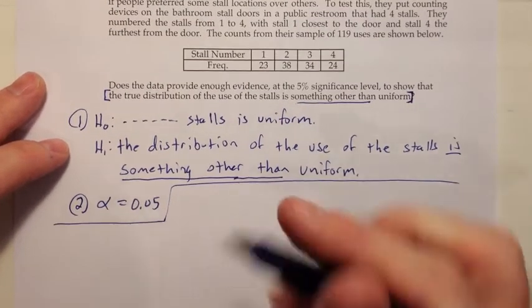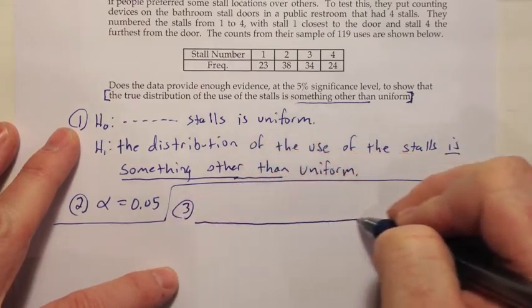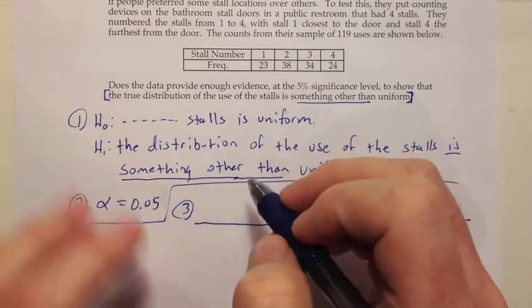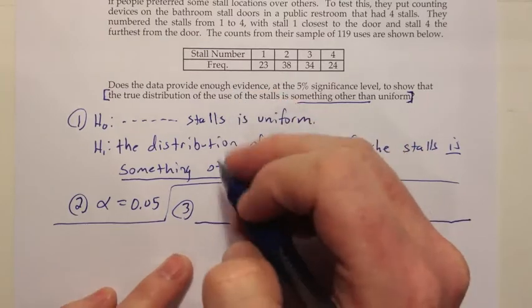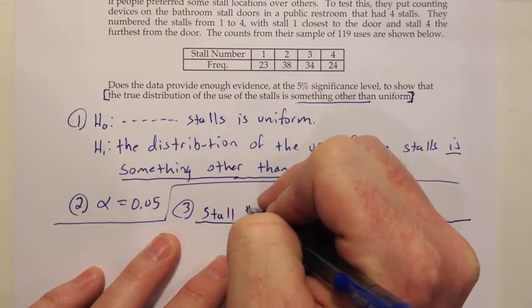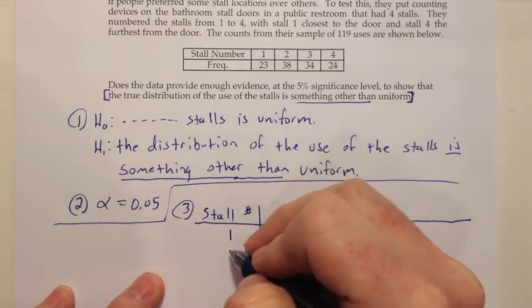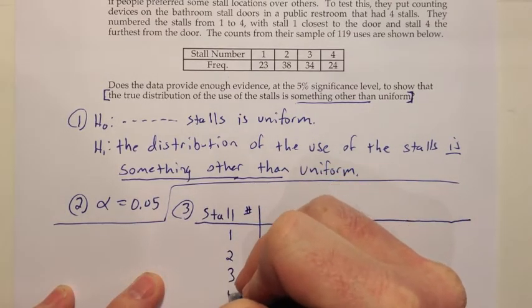And when we do the test statistic, we're going to make a table. The different things that we would want in that table, one of them would be the category, which would be stall number. And so in this situation, they have the choice of stall 1, 2, 3, or 4.